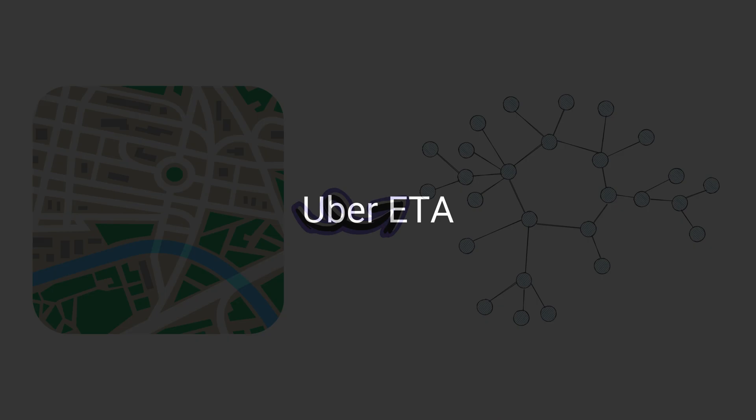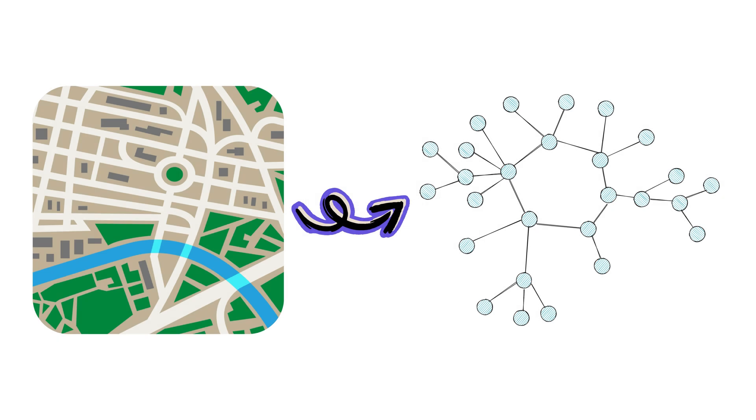They represent the physical map as a graph. Every road intersection is modelled as a node, while every road segment is modelled as a directed edge. So, computing ETA becomes finding the shortest path in a directed weighted graph.